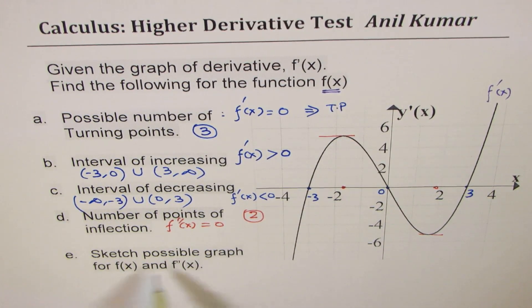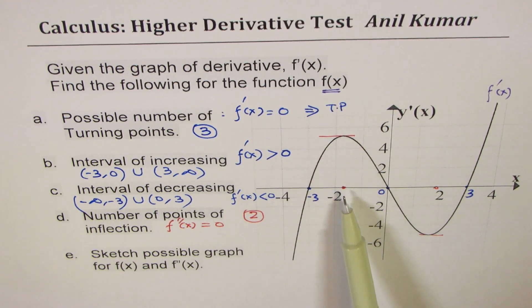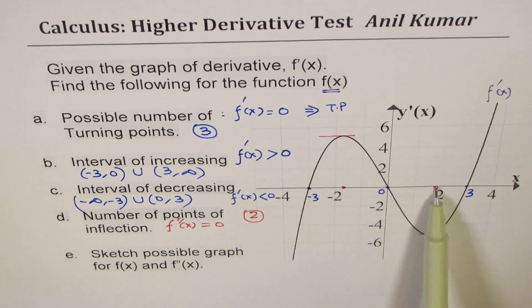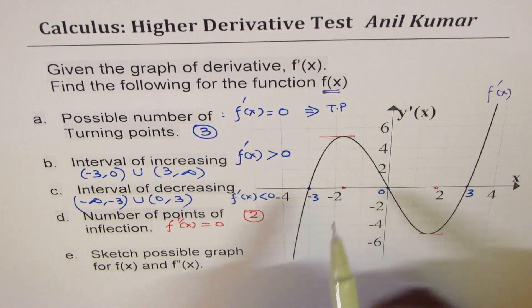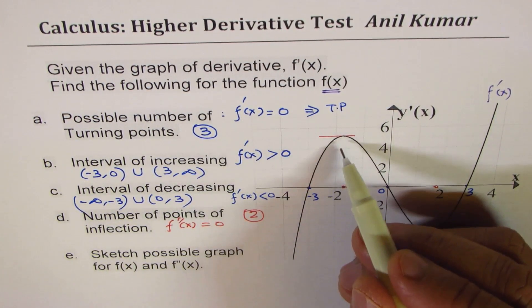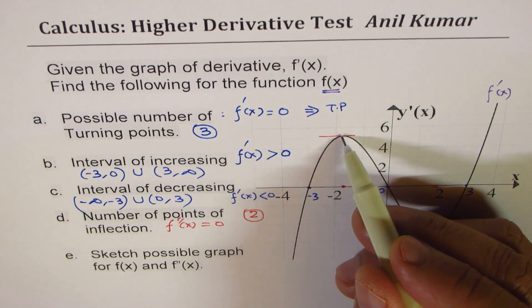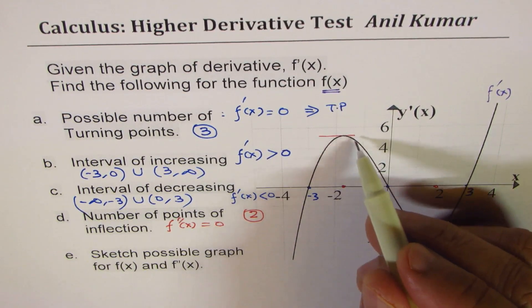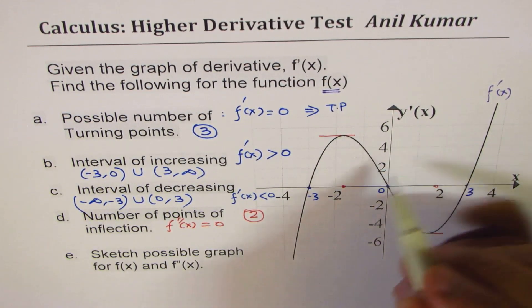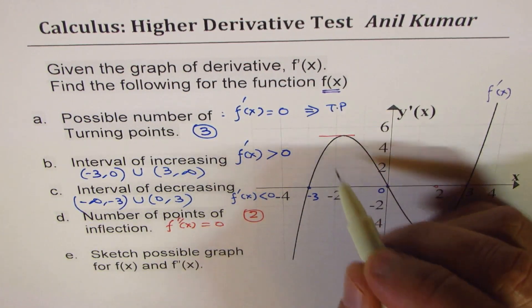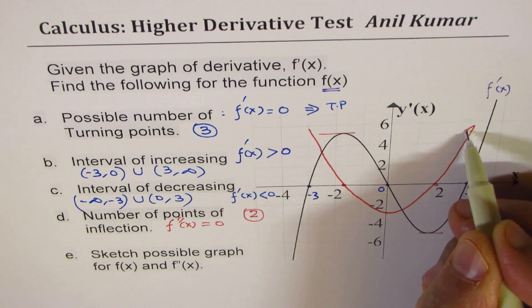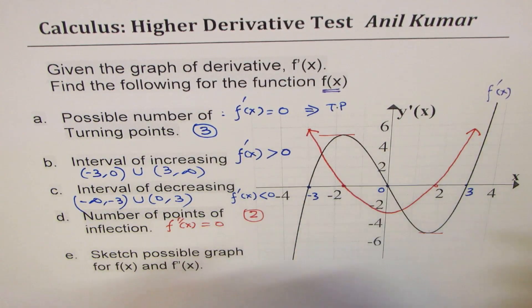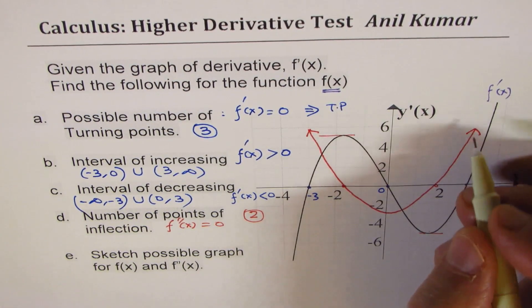Now let's sketch possible graphs for the function and for the second derivative. Since we found two zeros for the second derivative, let me sketch the second derivative first. In the interval where f'(x) is increasing, the second derivative is positive; where it is decreasing, the second derivative is negative; and at the turning points it is zero. This gives rise to a parabola-like shape, so we could sketch the second derivative curve like a parabola.